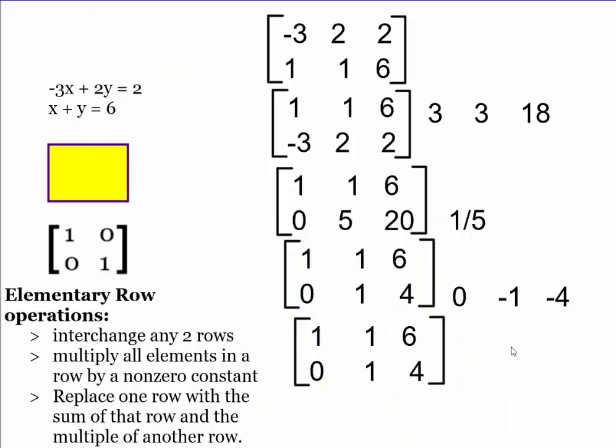And now, I'm going to add this to my first row. So, 0 plus 1 ends up with 1. I've got negative 1 plus 1 is going to end up with 0. There's my 0. And 6 plus negative 4, that's going to leave me with 2.